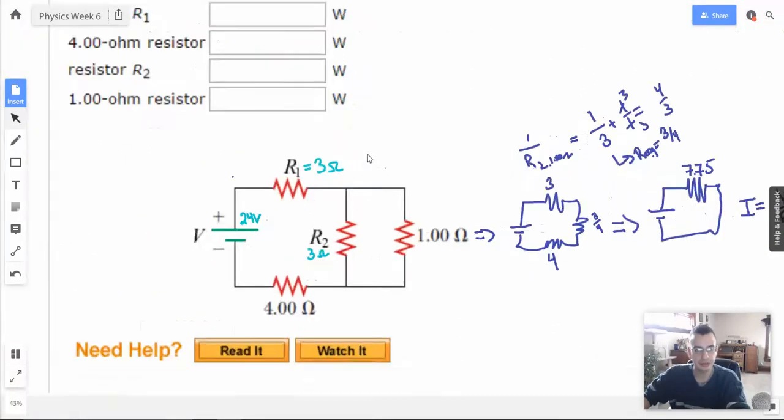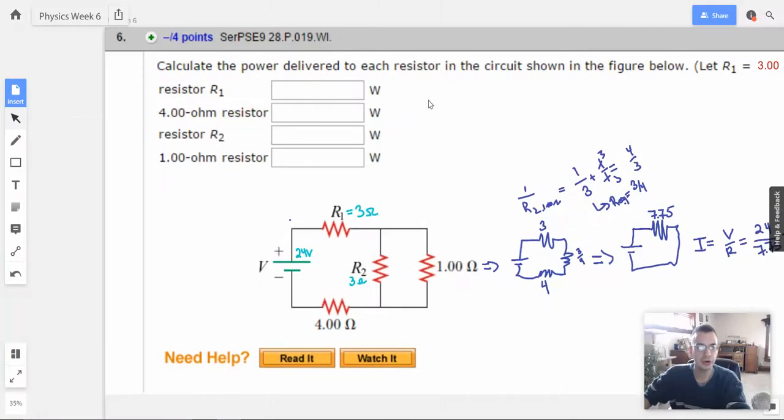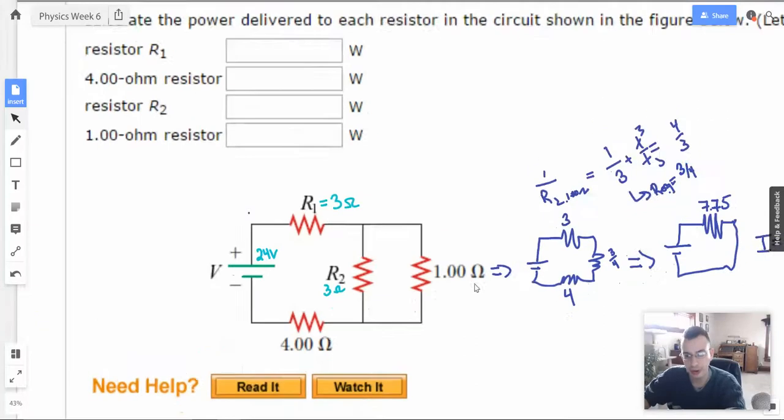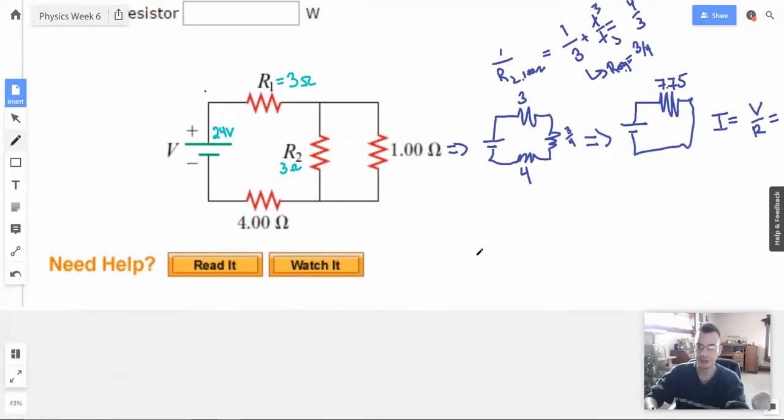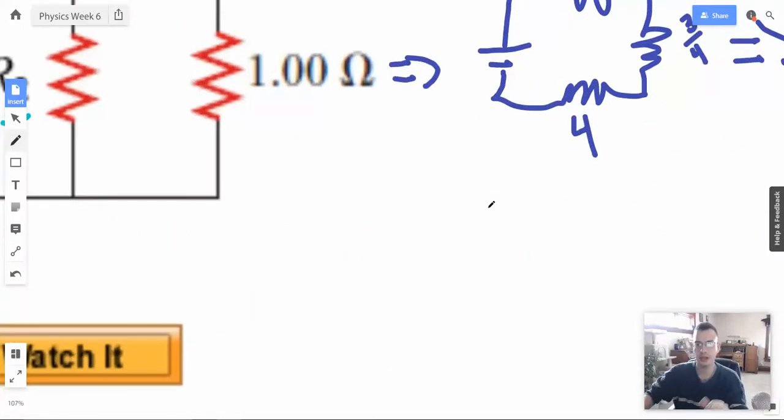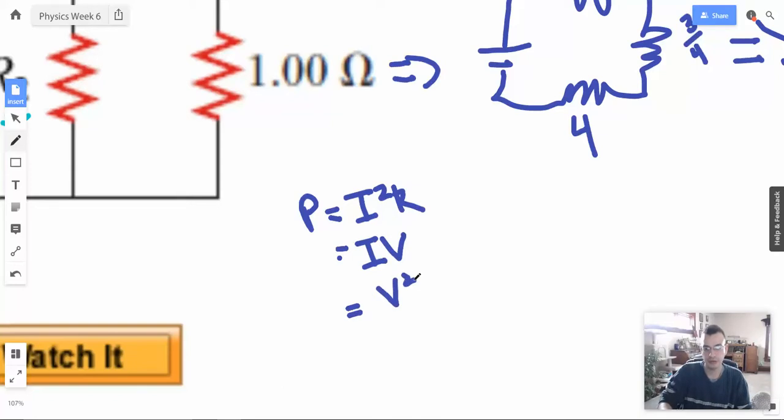All right. So let's see. They're asking for power delivered. Okay. So for power, specifically for resistors, there's 3 ways to write the equation for power. Power equals I squared R. Power equals IV. And power equals V squared over R. Just remember one of these and you can derive the other two using Ohm's Law.